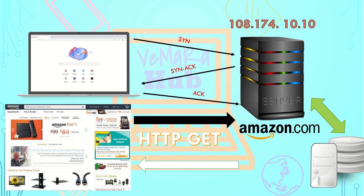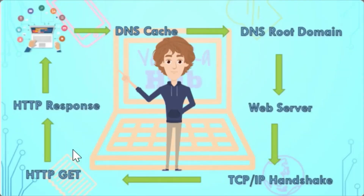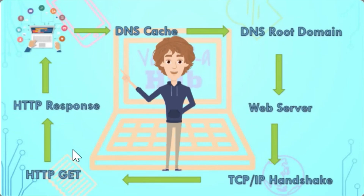To sum up: when we open a website in our browser, the browser checks the DNS cache for the DNS record of the URL. If not found, it checks up through the DNS root domain hierarchy until the record is found. The browser then connects to the web server using the IP address, a TCP/IP three-way handshake occurs, an HTTP GET request is sent from the client, and the HTTP response is returned and the website opens. Hope the information was helpful — thank you for watching!